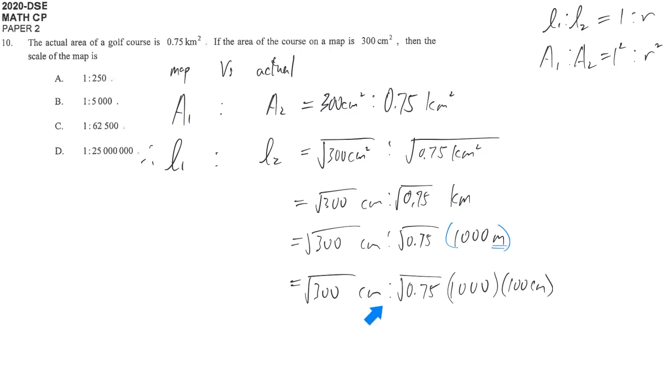Once we find that we have both cm and cm, then we divide both sides by cm. Therefore our final answer is square root 300 to 100,000 square root 0.75.